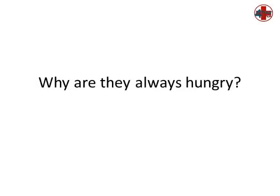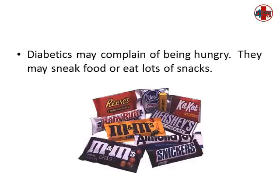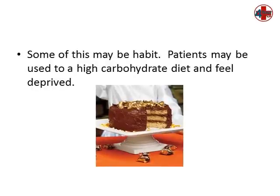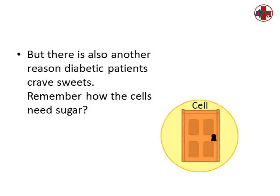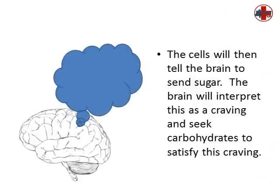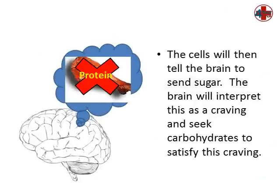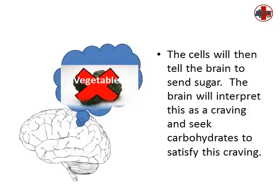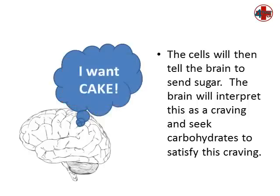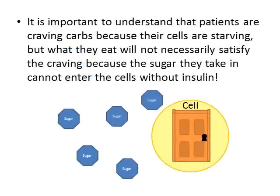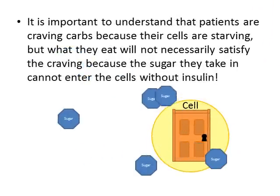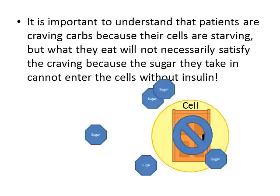Why are they always hungry? Diabetics may complain of being hungry and may sneak food or eat lots of snacks. Some of this may be habit — patients may be used to a high-carbohydrate diet and feel deprived. But there's also another reason diabetic patients crave sweets. The cells need sugar and will tell the brain to send sugar. The brain will interpret this as a craving and seek carbohydrates to satisfy it. Patients are craving carbs because their cells are starving, but what they eat will not necessarily satisfy the craving because the sugar still cannot enter the cells without insulin.